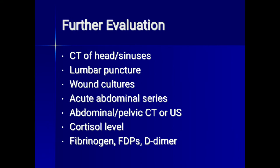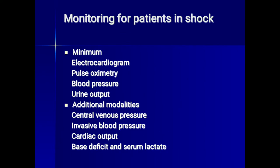Further evaluation can include CT of head or sinuses, lumbar puncture if meningitis is suspected, wound cultures, acute abdominal series including FAST (focused abdominal sonography for trauma), abdominal pelvic CT or ultrasound, cortisol level, fibrinogen, fibrinogen degradation products, and D-dimer. Monitoring minimum includes ECG, pulse oximetry, blood pressure, and urine output — ideally at least 30 ml per hour. Additional modalities include central venous pressure, invasive blood pressure, cardiac output, base deficit, and serum lactate.